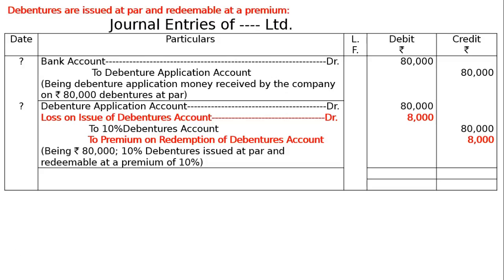Being Rs. 80,000 10% debentures issued at par and redeemable at a premium of 10%. The totalling of both columns will be Rs. 1,68,000 each. And this is the final answer.